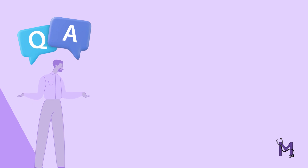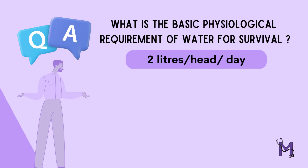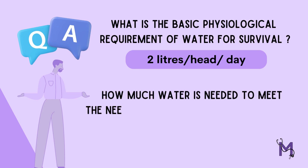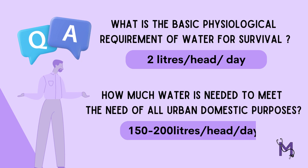Before we begin with our topic for today, let us answer two basic questions. According to you, what is the basic physiological requirement of water just for survival? The correct answer is 2 liters per head per day. Second, how much water do you think is needed to meet the need of all urban domestic purposes? The correct answer is 150-200 liters per head per day.